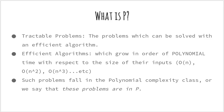We will start with what is P. We have developed several algorithms so far for problems such as finding shortest paths in a graph, searching for an element in an array, and sorting arrays. We call these algorithms efficient because they grow in order of polynomial time with respect to the size of their inputs. We have seen that these algorithms are often big O of N, big O of N squared, big O of N cubed, etc. Such problems fall in the polynomial complexity class — we say that these problems are in P.